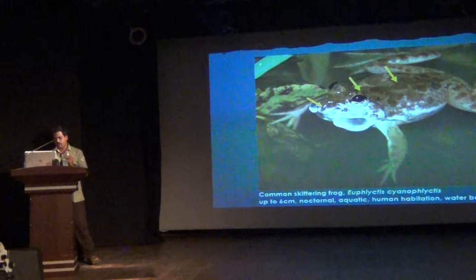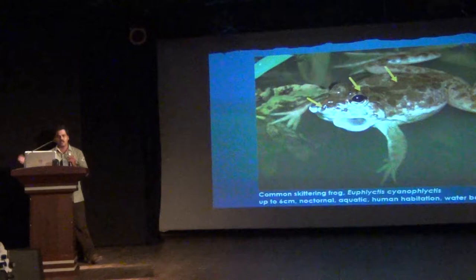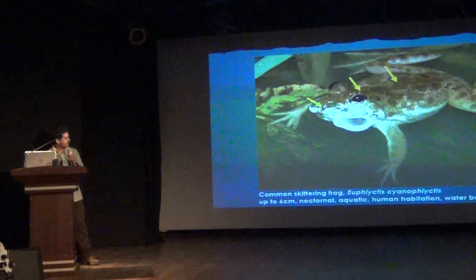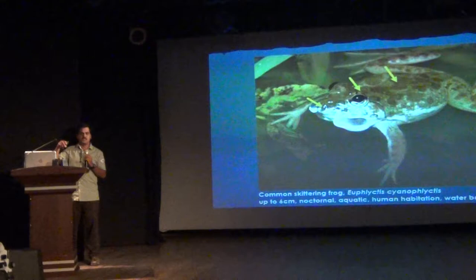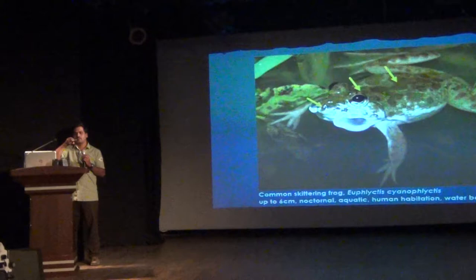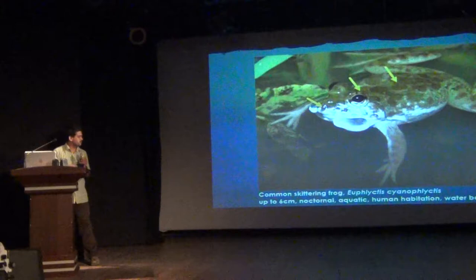Next, aquatic species. We have the common skittering frog, which you might have heard throughout the year at almost any water body. They have full webbing on the feet, swim, and stay inside the water. A characteristic feature is that the eyes are on top of the head — unlike other species where eyes are on the sides — because they need to see from the top of the water surface.